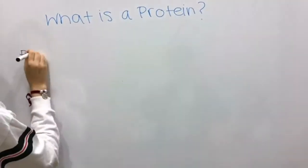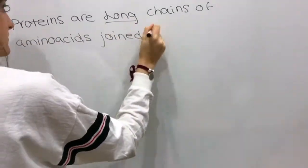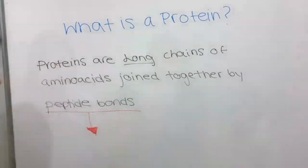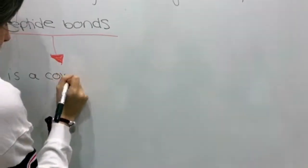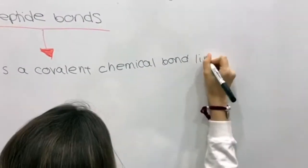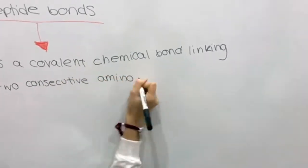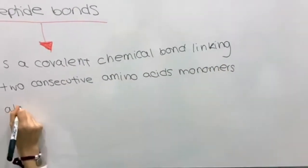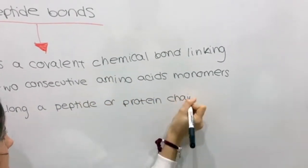What is a protein? Proteins are long chains of amino acids joined together by peptide bonds. Peptide bonds are a covalent chemical bond linking two consecutive amino acid monomers along a peptide or protein chain.